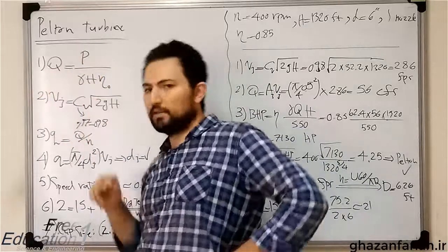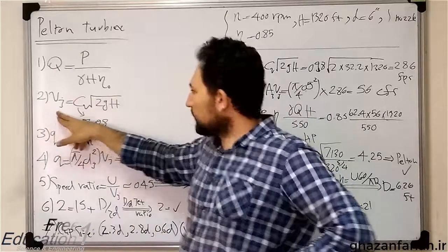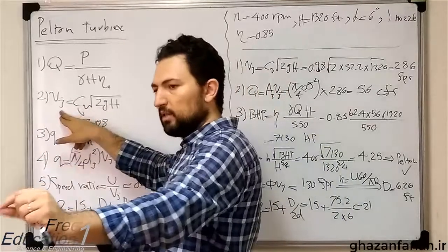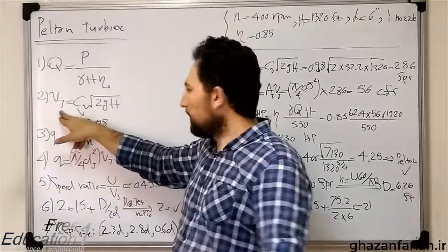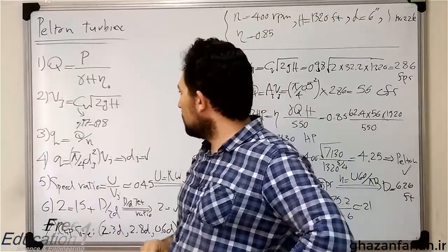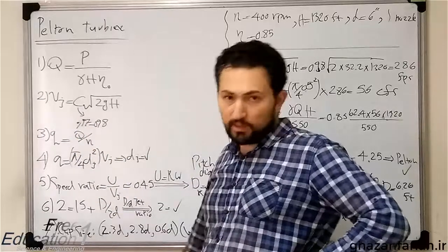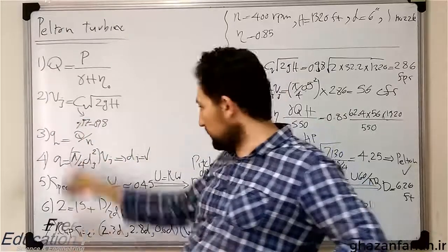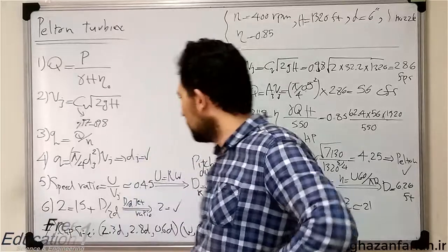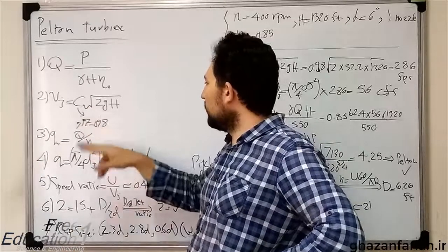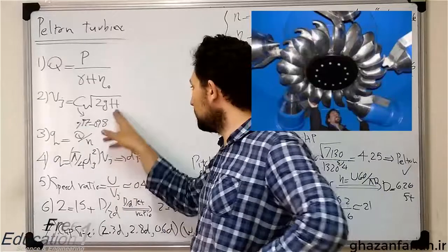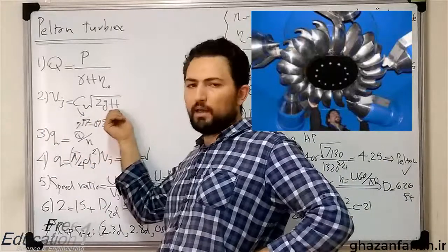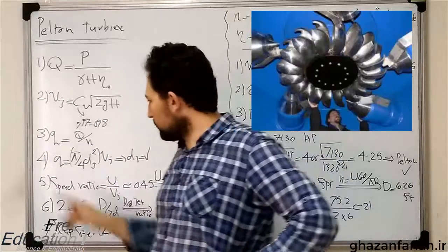The second step is a relation about the velocity of the jet, which leaves the injector and hits or touches the cup. The velocity of the jet is equal to a constant, velocity constant for example, which this constant has a magnitude between 0.95 to 0.98, and the square root of twice the gravity acceleration and the heads. This way, you can compute the velocity of the jet based on the head of the turbine.